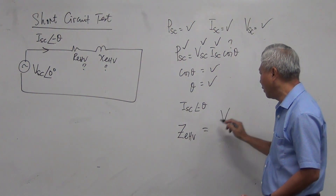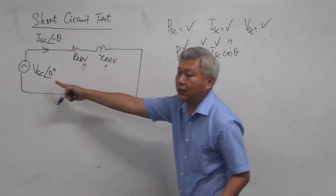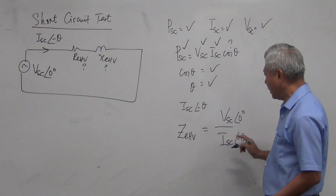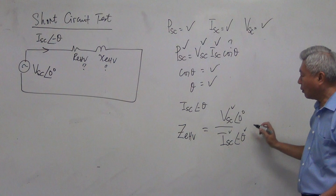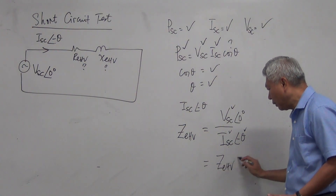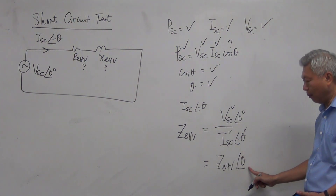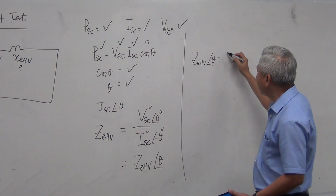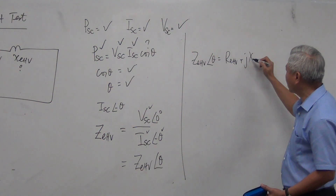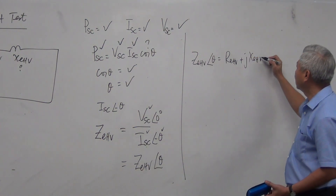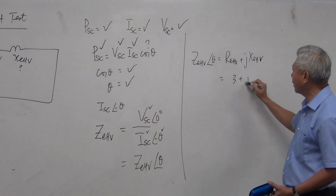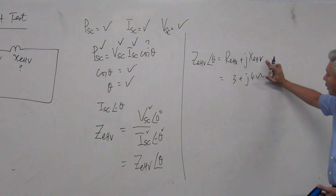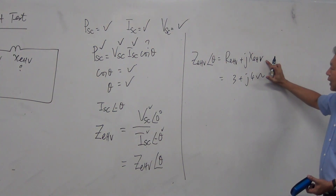Substitute theta into the current to get ISC at angle minus theta. Do not convert it into rectangular form yet, because there is no parallel branch here. Go straight to find the impedance: Z = VSC at 0° divided by ISC at minus theta. With all these values, impedance comes out in polar form. Then convert it into rectangular form — for example, if it is 3 + j4 ohms, then REHV equals 3 ohms and XEHV equals 4 ohms.